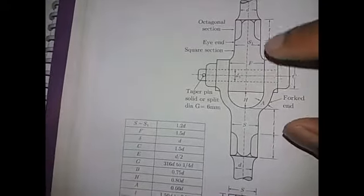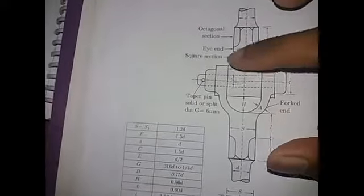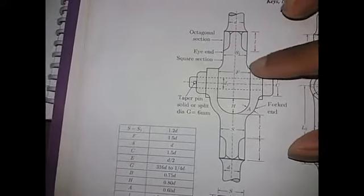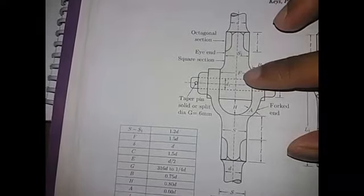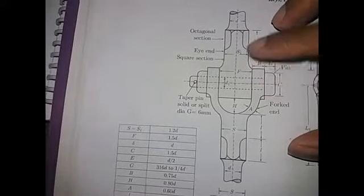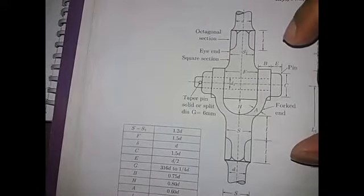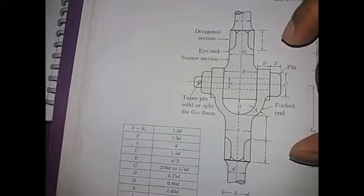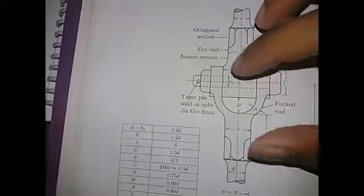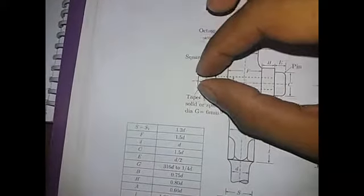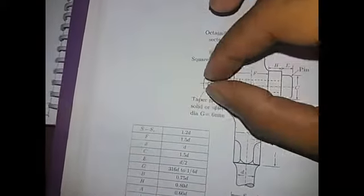The thickness of I is the same as the thickness of F. This is the diameter of the knuckle joint. This is the diameter of the pin.